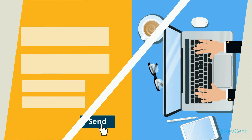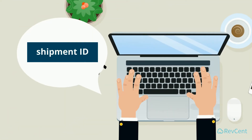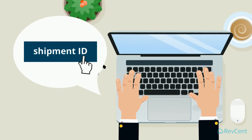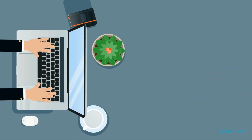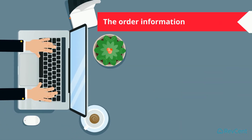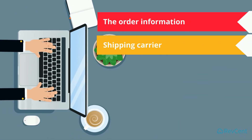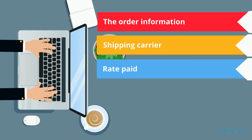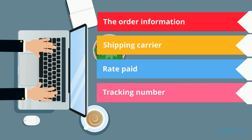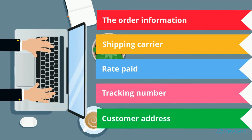Click a shipment ID to see or edit all the related data. Things like the order information, shipping carrier, rate paid, tracking number, customer address, and more are all neatly organized on every shipment record.